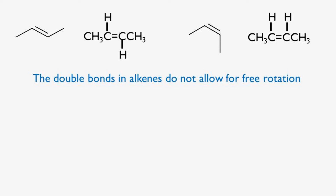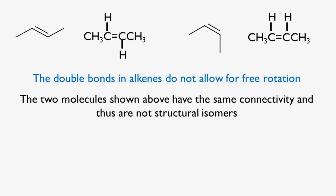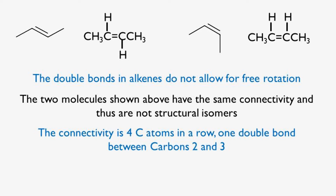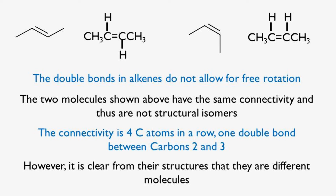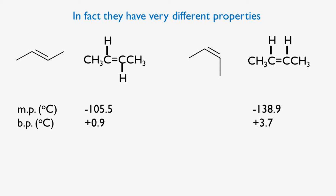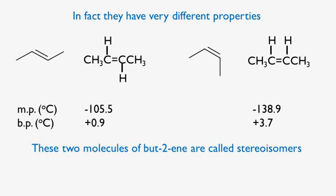Rule six. Double bonds in alkenes do not allow for free rotation. The two molecules shown have the same connectivity and thus are not structural isomers — the connectivity for both is a methyl group followed by a CH, a double bond, a CH, and then a CH3. However, it is clear from their structures that they are different molecules. I cannot redraw these structures by simply rotating around the double bond. In fact, they have very different properties — their melting points and boiling points are quite different, especially the melting point with more than 30 degrees difference. These two molecules of butene are called stereoisomers.